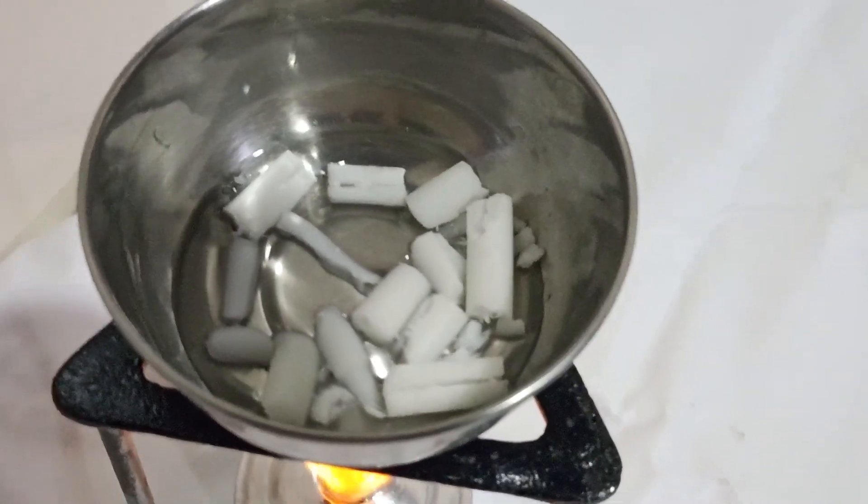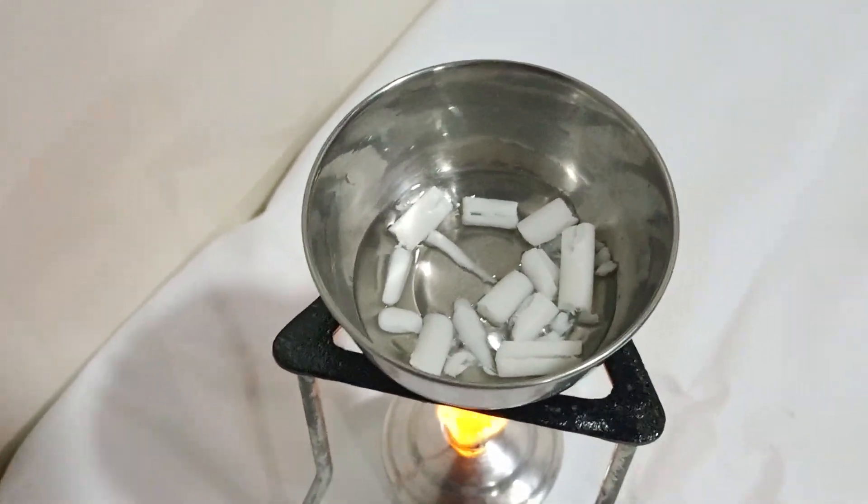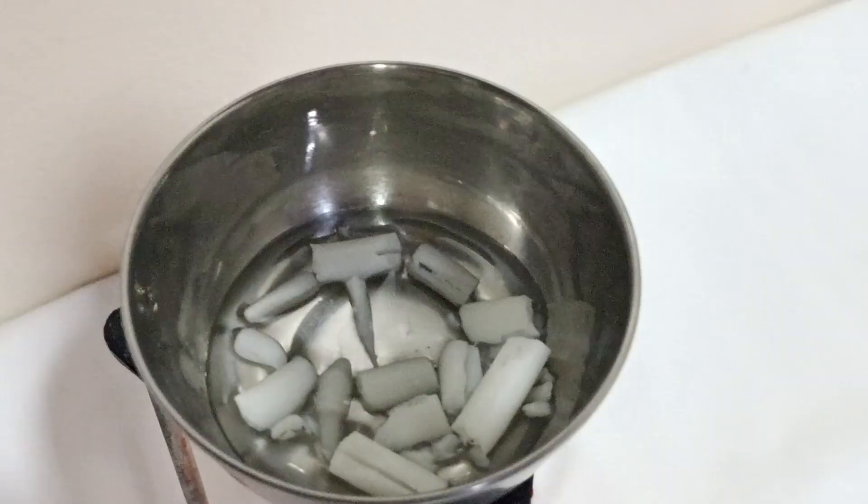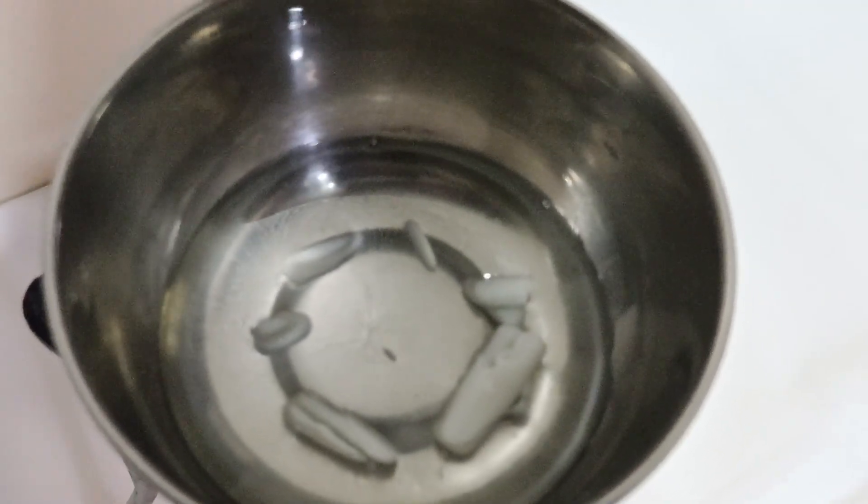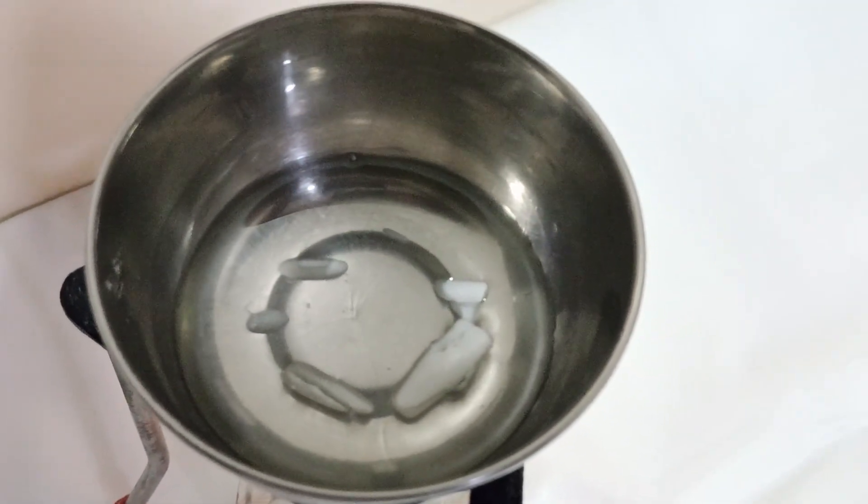Next we carefully heat the bowl using a spirit lamp. As the temperature rises, the wax starts melting. Look closely, the solid wax has now turned into a liquid due to heat. This is an example of a physical change.